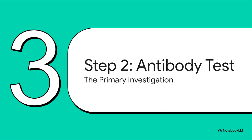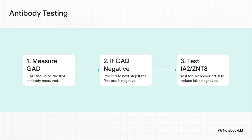So what do you do when that clinical picture is a bit murky? You move from clues to confirmation, and that brings us to step 2: antibody investigation. This really is the modern cornerstone for diagnosing suspected adult-onset type 1 diabetes. The guidelines recommend a cascade approach to boost your diagnostic accuracy. You start with GAD antibodies — they're the most common in this group. But if GAD comes back negative, you don't stop there; you move on and test for IAA-2 and/or ZNT-8. This stepwise method is designed to be as sensitive as possible and catch those cases you might otherwise miss.